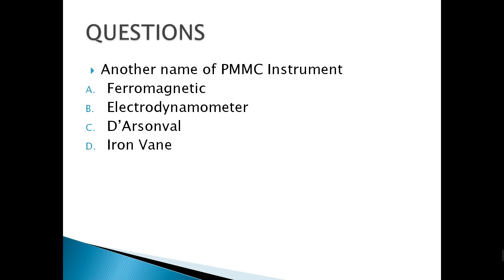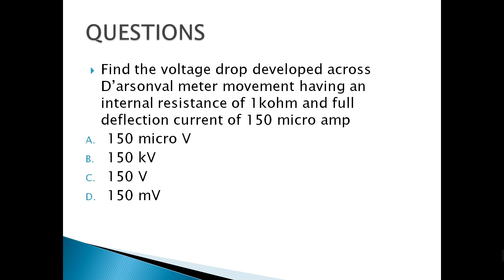Next, we have: what is another name for a PMMC instrument? PMMC stands for Permanent Magnet Moving Coil, and it is also called the D'Arsonval meter movement.